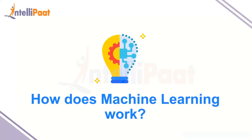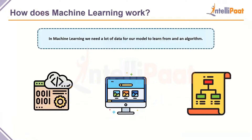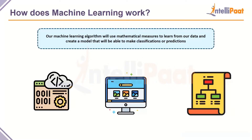Performance is checked by keeping some data aside during training. That held-out data, which the model knows nothing about, is shown to the model and we check how many correct predictions were made. In machine learning, we need a lot of data for the model to learn from. The first thing you need to solve a problem reliably is a large amount of data, which is why machine learning has taken off given the volume of data available today.